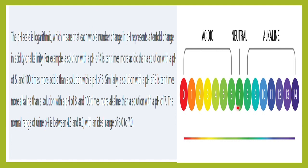Because it is a logarithmic scale, each number change represents a 10-fold change. For example, if a patient's pH is 4, it is 10 times more acidic than pH 5, and 100 times more acidic than pH 6.